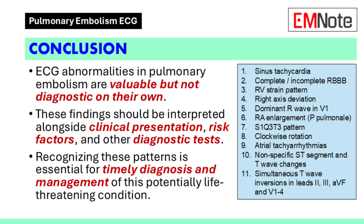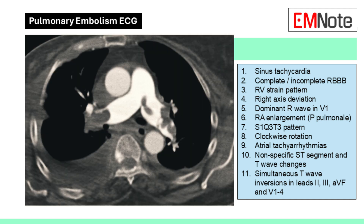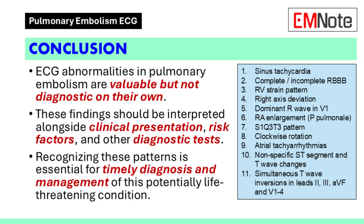In conclusion, a variety of ECG abnormalities can be observed in acute pulmonary embolism. While these findings can raise suspicion for pulmonary embolism, they are not diagnostic on their own. They should be interpreted in conjunction with the patient's clinical presentation, risk factors, and other diagnostic tests. Recognizing these patterns is essential for timely diagnosis and appropriate management of this potentially life-threatening condition.